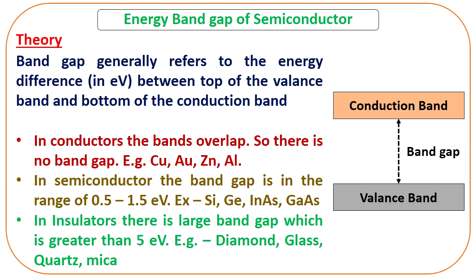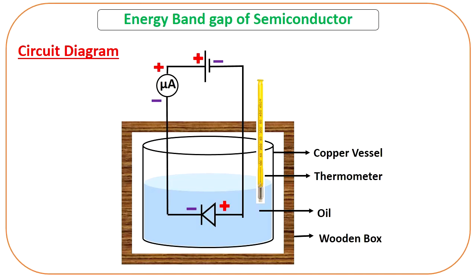Depending on the value of the band gap, materials are categorized into three broad categories. For a semiconductor, the band gap ranges from 0.5 to 1.5 electron volt. For a metal, the band gap is zero because of the overlapping of the conduction band and valence band. For an insulator, the band gap is quite large, ranging from more than 1.5 to 2 electron volt.